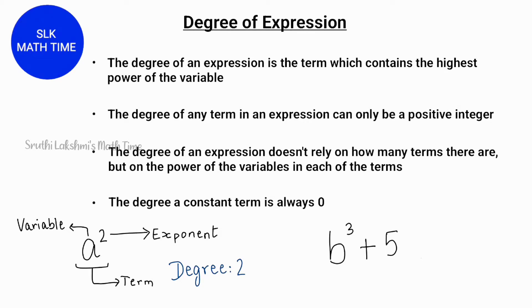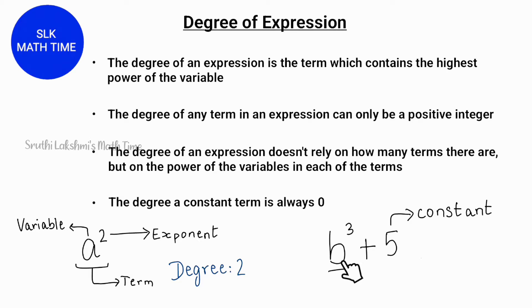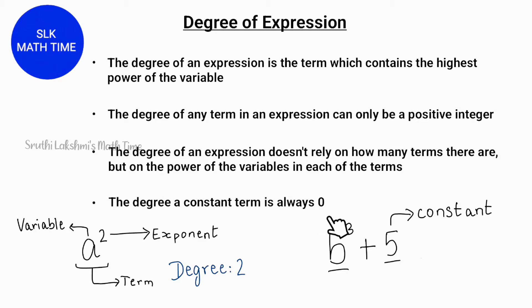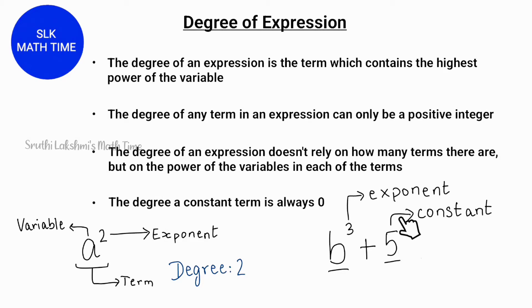So now let's look at an example. Here we have the expression b³ + 5. Here 5 is a constant, which means that it doesn't have an exponent. In this expression there are two terms: the first being b³ and the second which is 5, the constant. Remember, a constant term's degree is always 0, so 5's degree is 0. Now let's look at the first term, b³ — here 3 is our exponent, so the degree of this term is 3. And since we have a constant as our second term, our degree for this expression is 3.